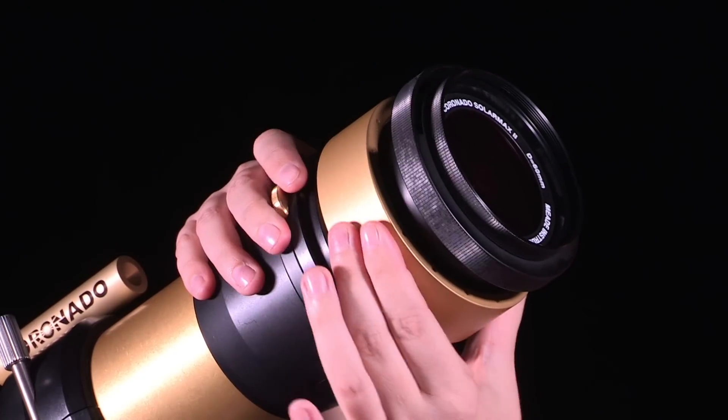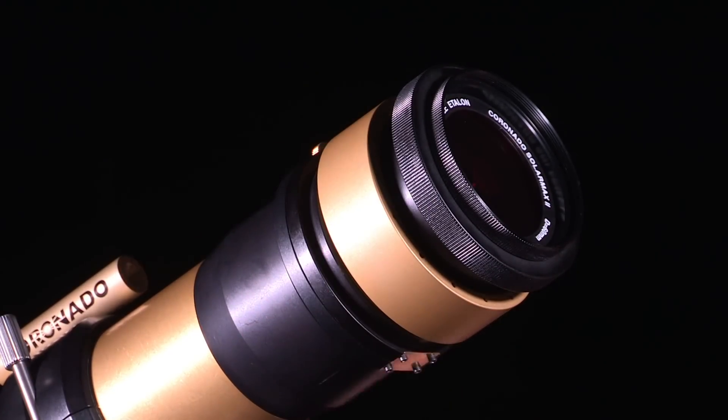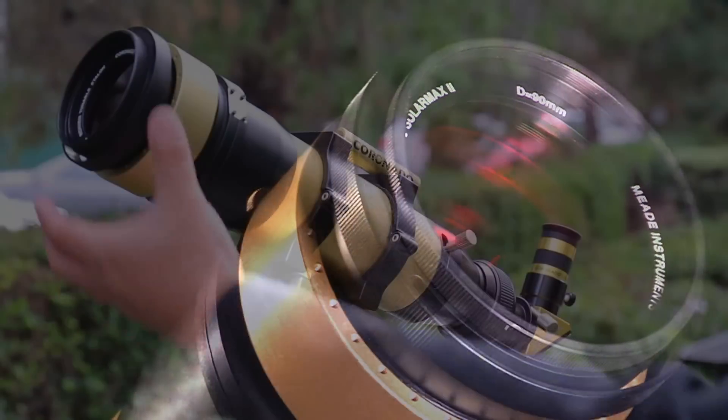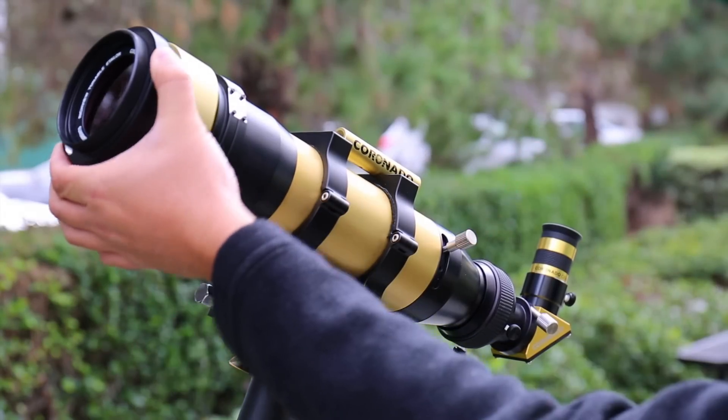Both the 60mm and 90mm models have an optional, easy-to-use double-stack filter that greatly increases the contrast and gives spectacular 3D effects showing increased surface detail.